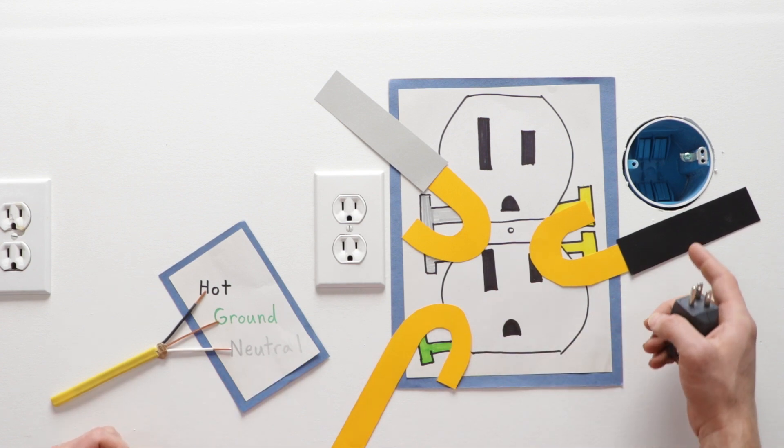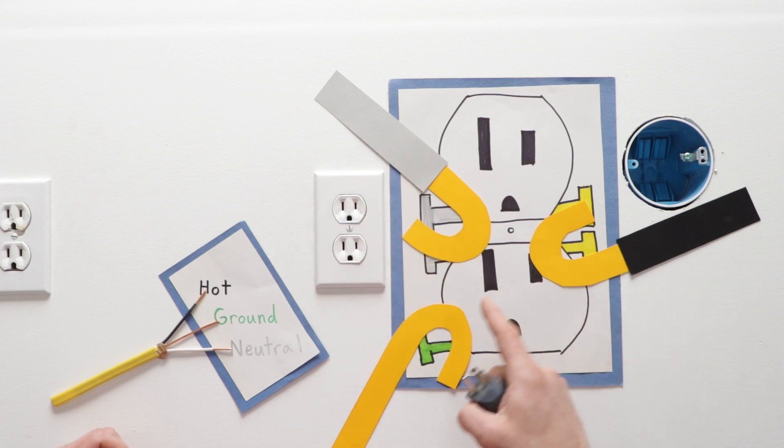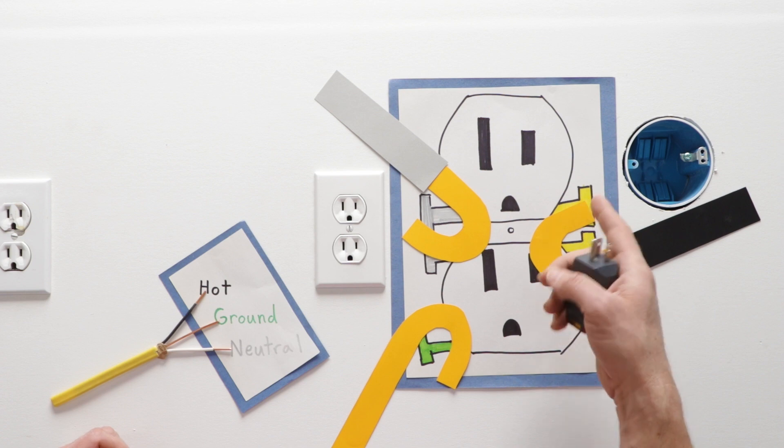This will give it power coming in and power going out. If there's a problem with your white, your ground will keep the power from just being loose in the box.